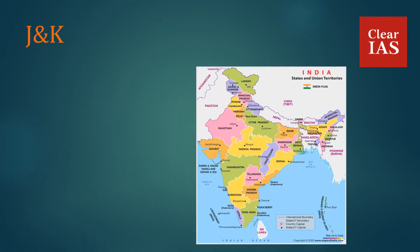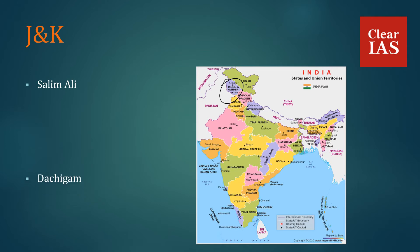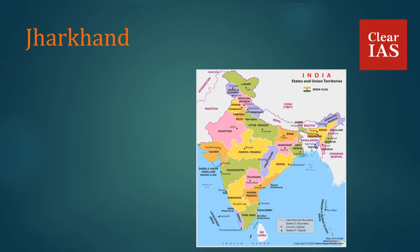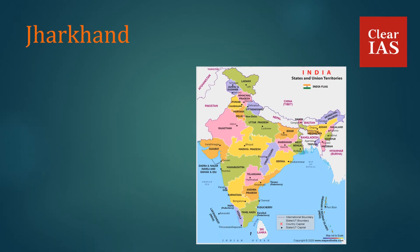In Jammu and Kashmir, we have Salim Ali National Park, Dachigam National Park, Kishtwar, and Kazinag National Park. In Jharkhand, we have Betla National Park.